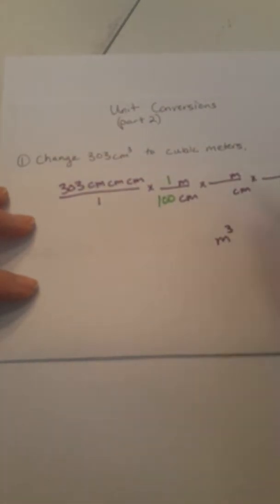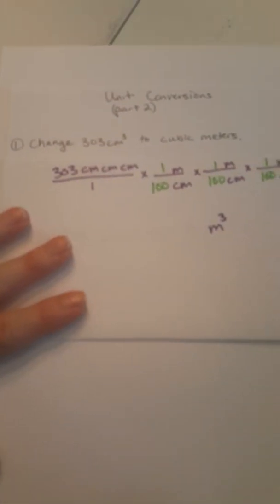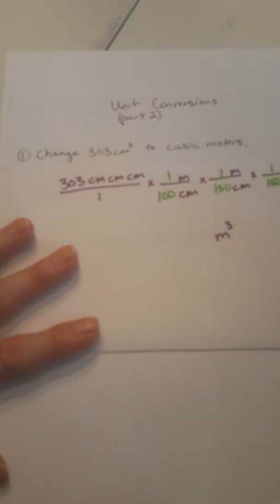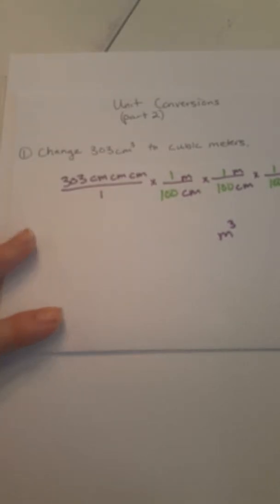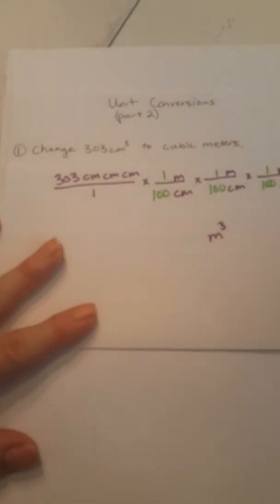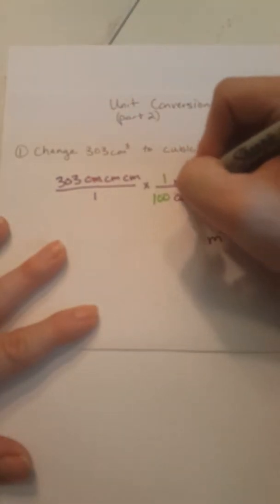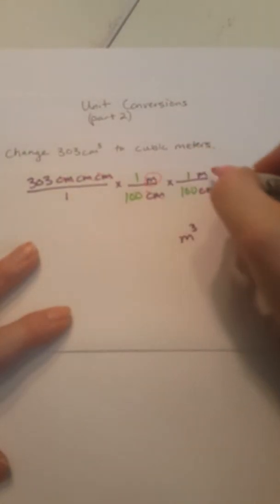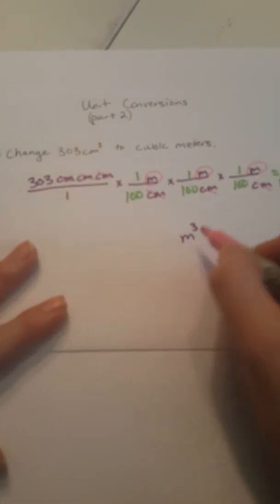I just need the conversion between centimeters and meters: 100 centimeters is equivalent to one meter. So I write that conversion ratio down. Multiplying the tops gives 303, and multiplying the bottoms gives 1 followed by six zeros. I double-check my units — the centimeters all cancel and I end up with meters times meters times meters, which is meters cubed. Correct.